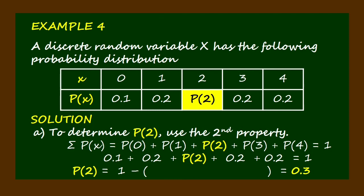Take note that the sum of all the probabilities is equal to 1. We solved for P(2) by adding all the given probabilities: 0.1 plus 0.2 plus 0.2 plus 0.2 equals 0.7. Then 0.7 was subtracted from 1, and the difference is 0.3. Therefore, P(2) is 0.3.